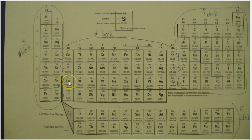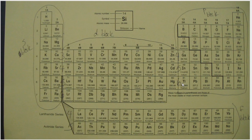Now we go back up to lutetium, which is 5d1, then 5d2, all the way down to mercury, which is 5d10. Thallium is 6p1, then 6p2, all the way through radon, which is 6p6.